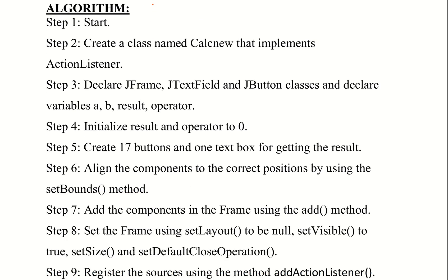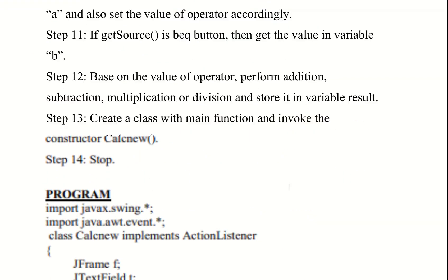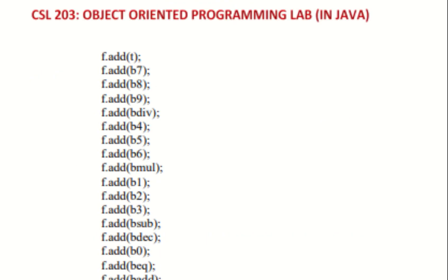Look at the algorithm. First step: start. Then create a class named CalcNew that implements ActionListener. Then declare JFrame, then a text field to display the result, then JButton classes. We need to implement the buttons and get the result.